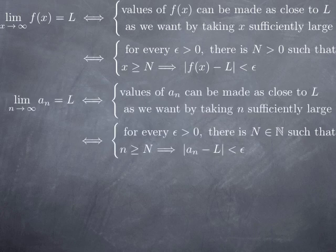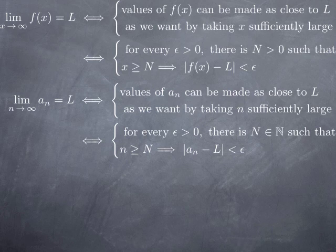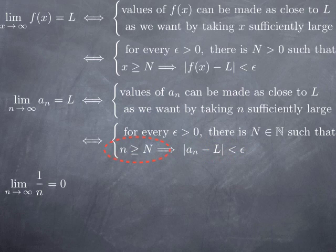We can do exactly the same for a sequence, which is just a particular kind of function. Instead of taking a real number as input, it takes a natural number as input. We take the same definition for a function defined on the natural numbers: the limit of the sequence aₙ as n goes to infinity is L if we can make the values of aₙ as close to the limit as we want by taking n sufficiently large. Formally, for every epsilon, if we want the distance between aₙ and L to be less than epsilon, there is some capital N such that whenever the index n is greater than N, we get aₙ within that distance of L.